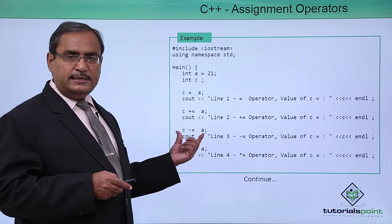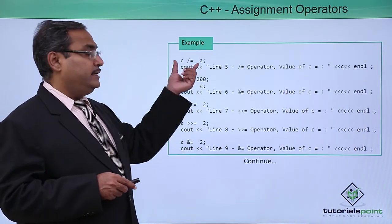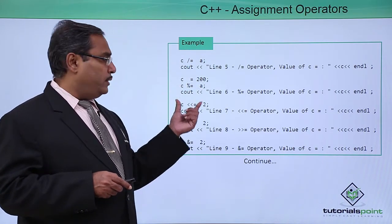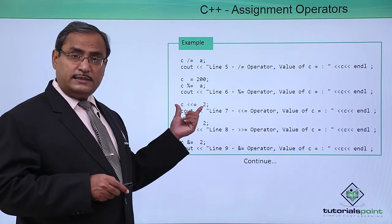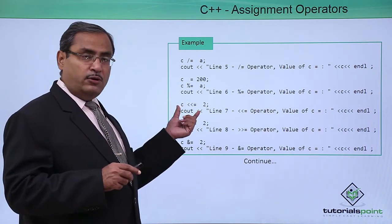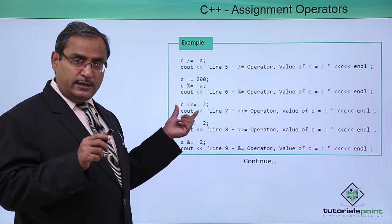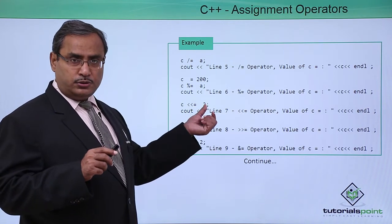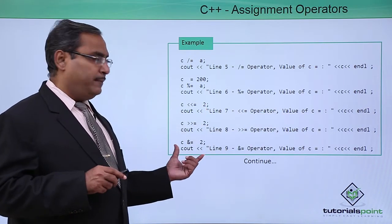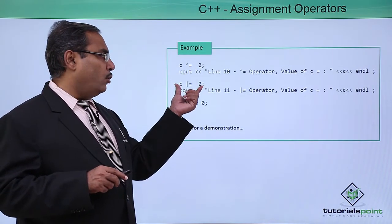In this way we perform: C -= A, C *= A, C /= A, C %= A, and C <<= 2 — meaning a left shift by 2 bit positions, with the result assigned back to C. We have also used XOR-equal-to and OR-equal-to and so on.